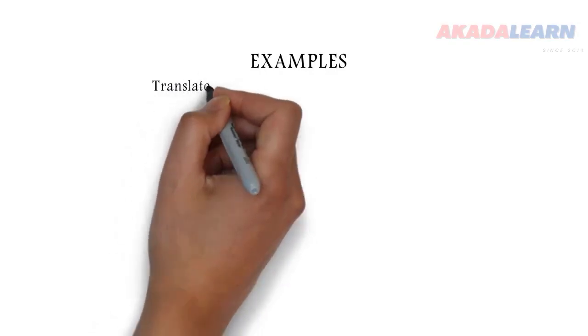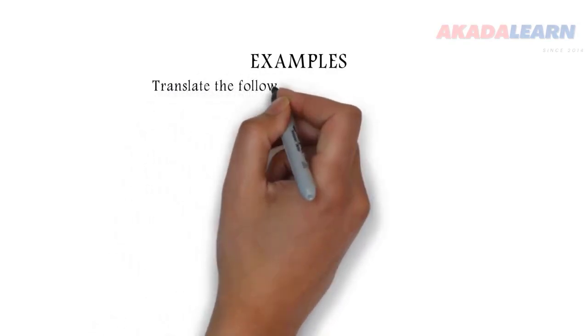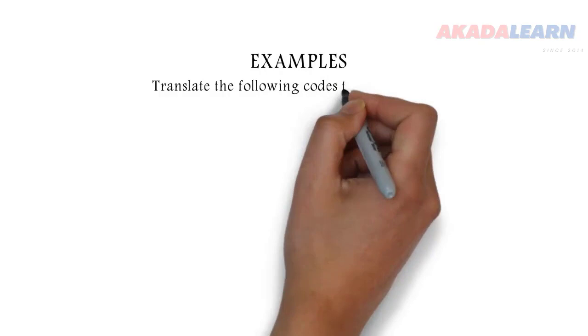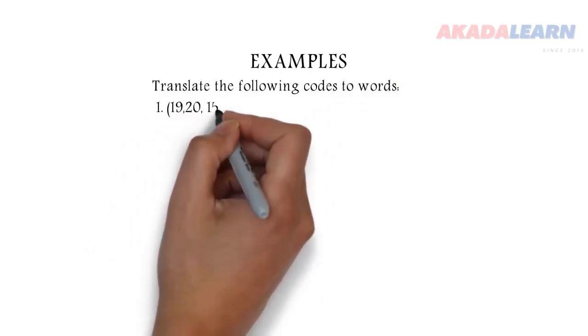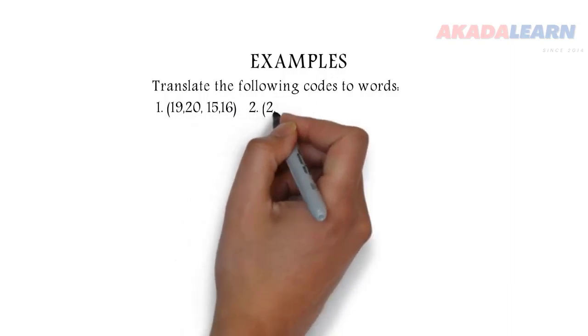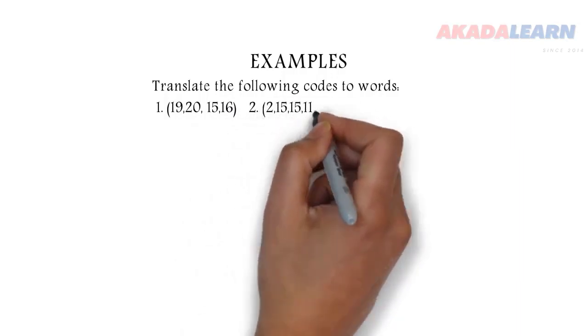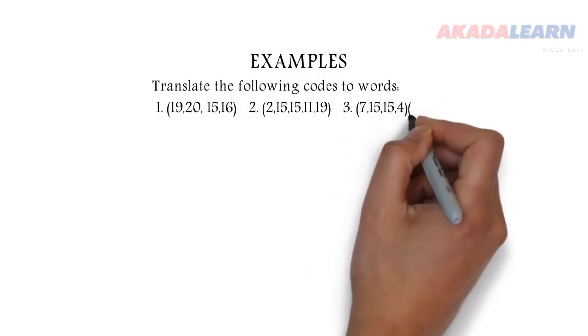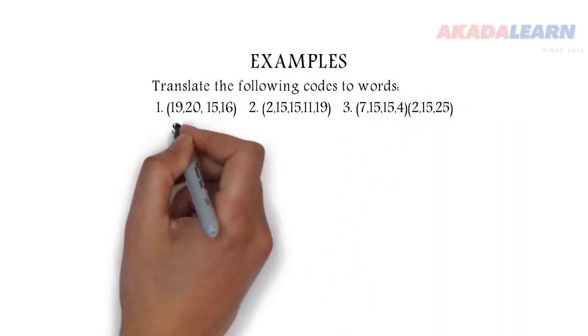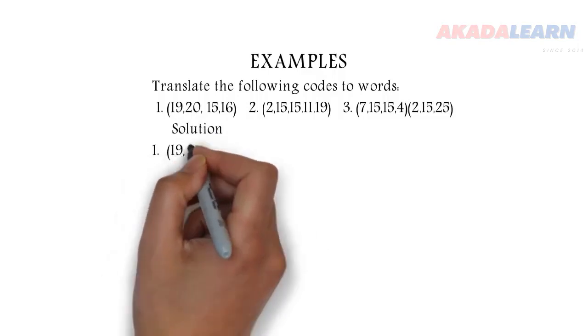Now, let's see some examples. We are asked to translate the following codes to words. Number 1: 19, 20, 15, 16. Number 2: 2, 15, 15, 11, 19. Number 3: 7, 15, 15, 4, 2, 15, and 25.